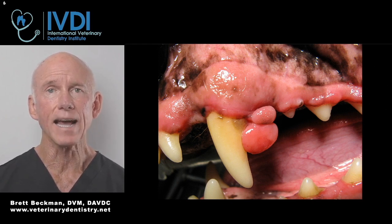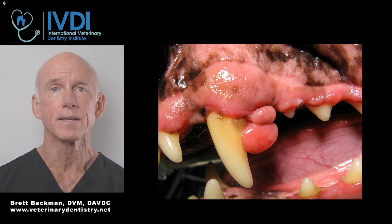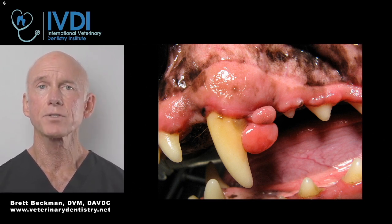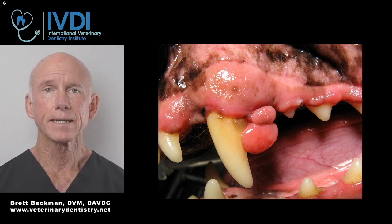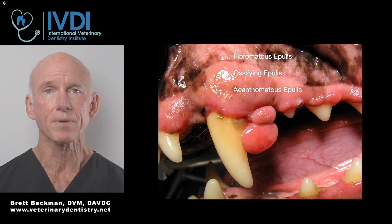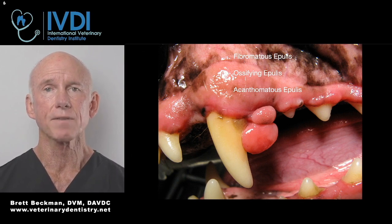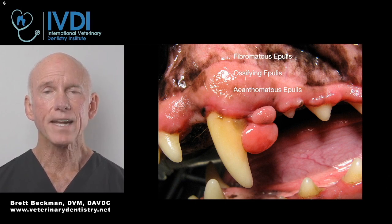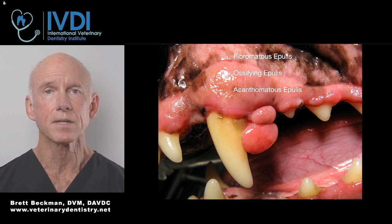Let's talk about what the classic nomenclature has been for a gingival mass. Many of you, if not all of you, are familiar with the term epulus in your exposure to cases of oral masses in practice. Classically, we've seen three designations termed epulus depending on the histopathologic characteristics: the fibromatus epulus, the ossifying epulus, and the acanthomatous epulus.